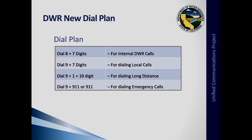The new dial plan: one of the main things to remember when you receive your new phone is that for any DWR site — whether a region, field office, or headquarters — you no longer need to dial an area code. You will simply dial 8 and the seven-digit phone number. For local calls, dial 9 and the seven digits. For long distance, dial 9-1 and the ten-digit number. For emergency calls, you can dial 911 or 9-911.